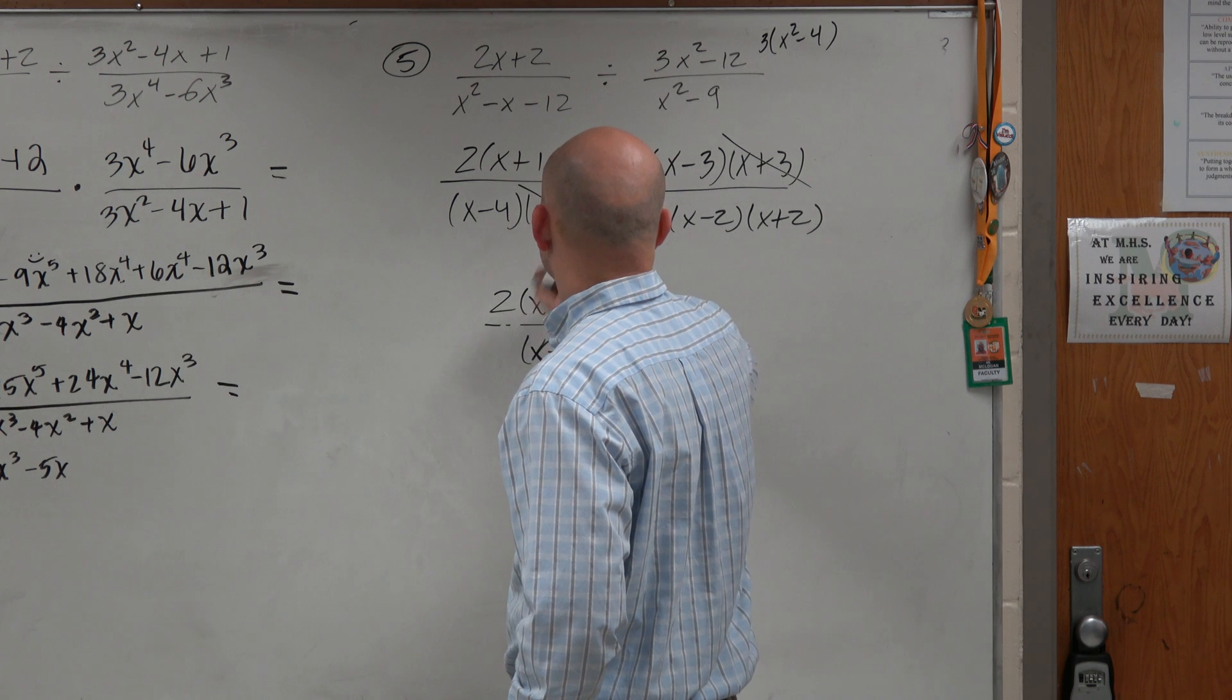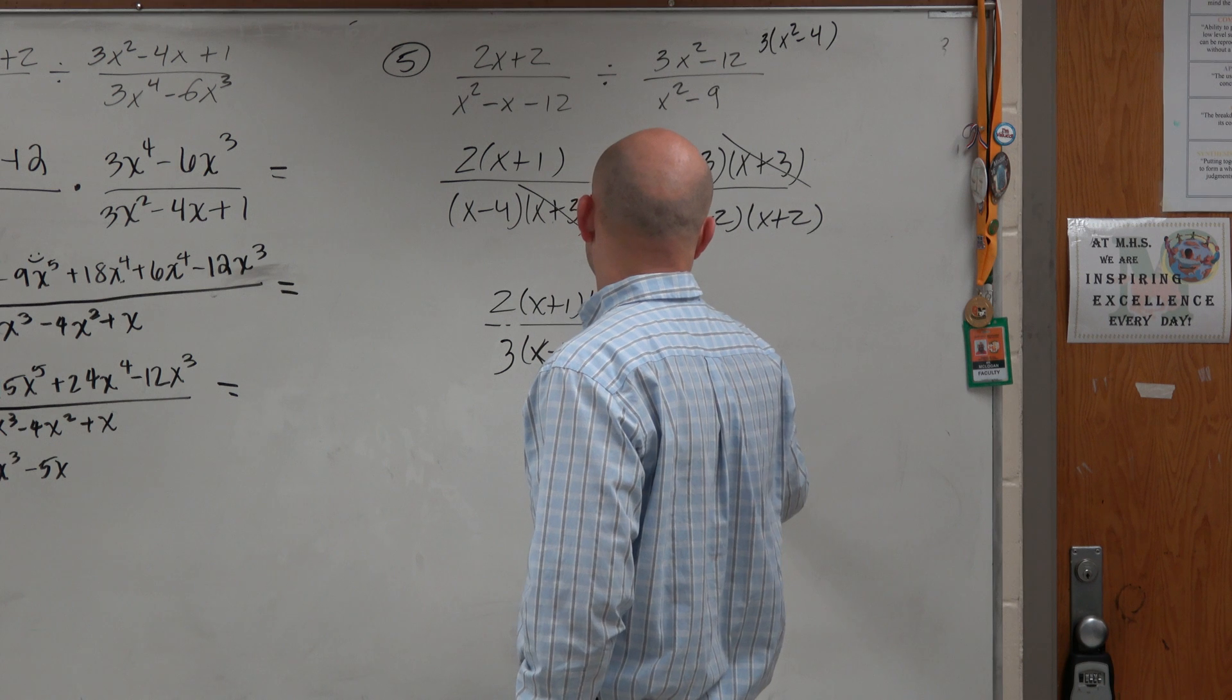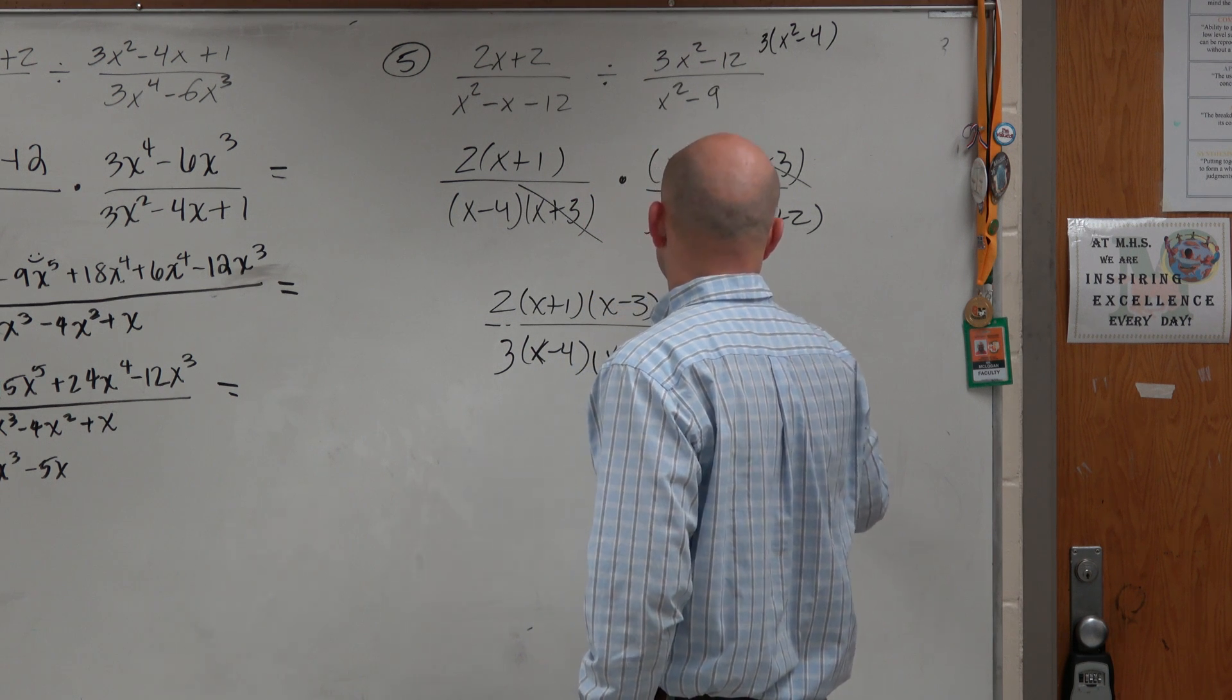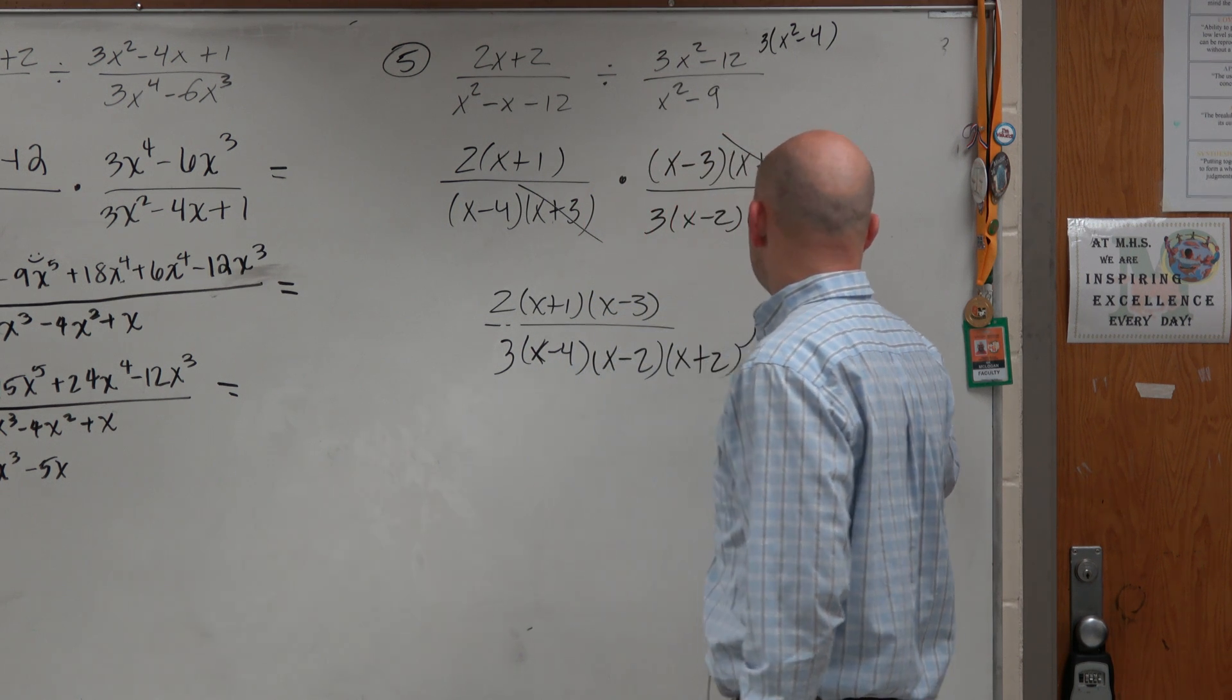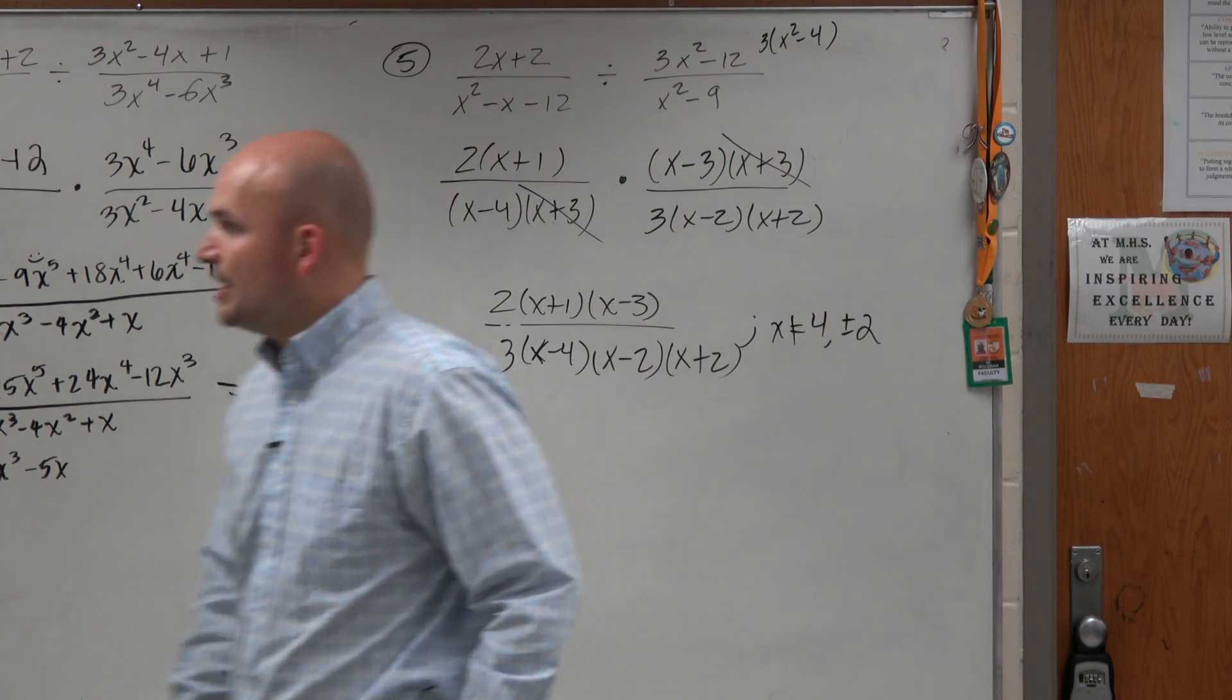2 is over there? 3 in the box. Yeah. I'm not sure if I wrote that one down wrong the way I wanted to. So x cannot equal 4 and plus or minus 2. OK, alright.